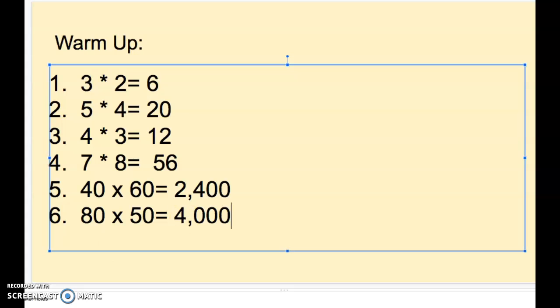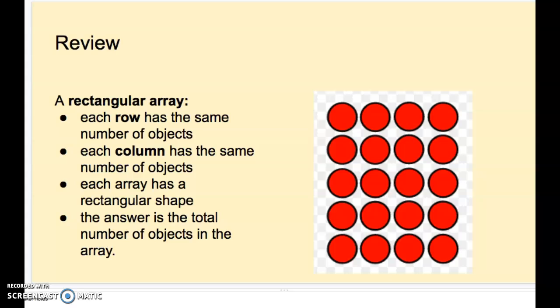So earlier this week fourth graders, we started working or reminding ourselves on how to use arrays. One thing we reviewed was rectangular arrays. Rectangular arrays have the same amount of rows and the same amount of columns for each object. But the arrays represent a rectangular shape. And the answer is the total number altogether.